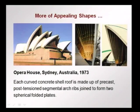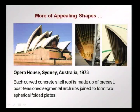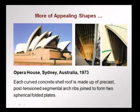Everyone recognises the Sydney Opera House in Australia — it has become one of the emblems of Sydney. It is a curved concrete shell roof made up of precast post-tensioned segmental arch ribs joined to form two spherical folded plates for each part. You see the shell made up of two folded plates from ribs that are put together and post-tensioned.